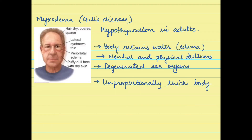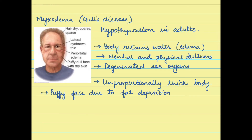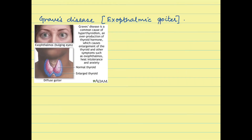Myxedema is the other disorder associated with hypothyroidism and occurs in adults. When thyroxine levels decrease, the body retains water resulting in edema. There is mental and physical dullness, degeneration of the sex organs, a disproportionately thick body due to fat deposition, and the face gives a puffy appearance.